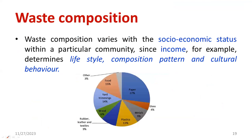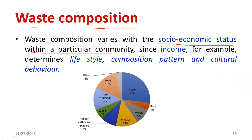Now we move to the second part: waste composition. Composition means what the major components are inside the waste. For example, in 1 kilogram of waste, 0.3 kg might be carbohydrate, 0.2 kg protein, and 0.3 kg water or moisture content. Waste composition depends on the socioeconomic status of a particular territory, country, or community. It also depends on income, which is directly proportional to purchasing power, as well as lifestyle, consumption patterns, and cultural behavior.